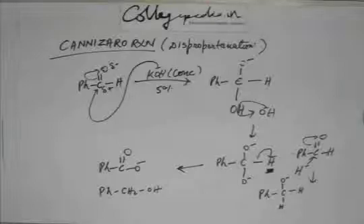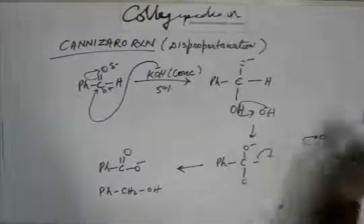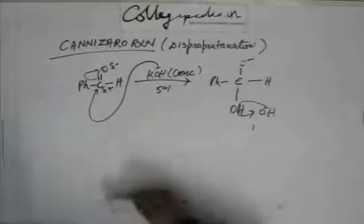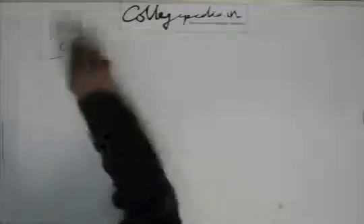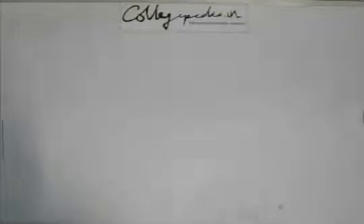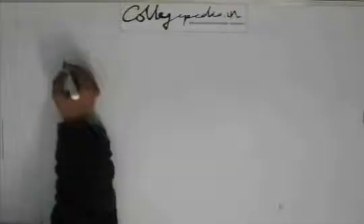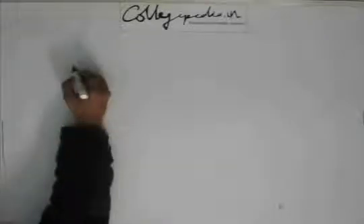So now we will practice some problems and we will learn how to write the product of given substrate for Cannizzaro reaction. Before that, we have to identify which reactant or which kind of substrate will give Cannizzaro reaction at the first place.